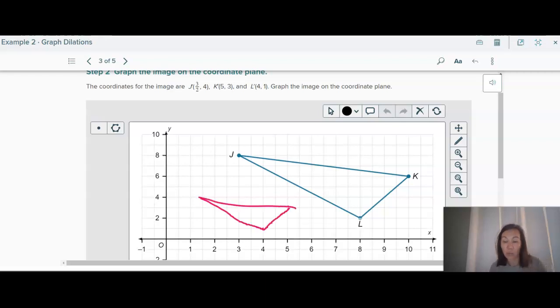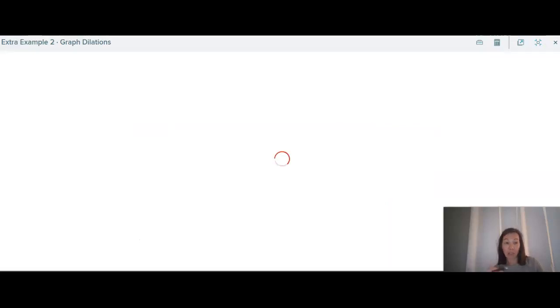So we're really only going to be, and you guys can try the one on page 469. That one's by a scale factor of 1 third. But we're really only going to be graphing ones where the center of dilation is the origin. So literally all you're doing is just multiplying the coordinates by the scale factor and then graphing it.